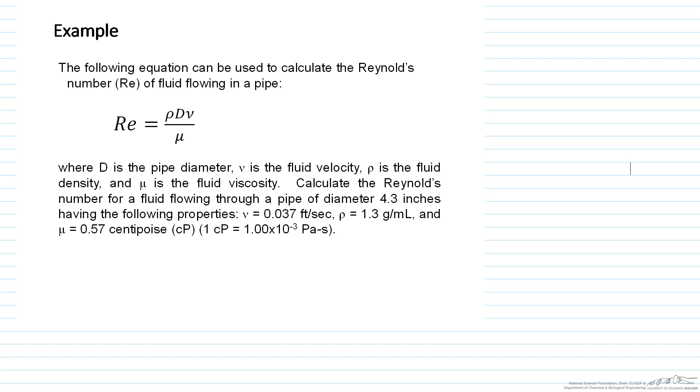And our goal is to calculate the Reynolds number for a fluid flowing through a pipe of diameter 4.3 inches, having the following properties: it's flowing at 0.037 feet per second, has a density of 1.3 grams per milliliter, and has a viscosity of 0.57 centipoise. And then we have this conversion factor that 1 centipoise is 1 times 10 to the negative 3 pascal times seconds.